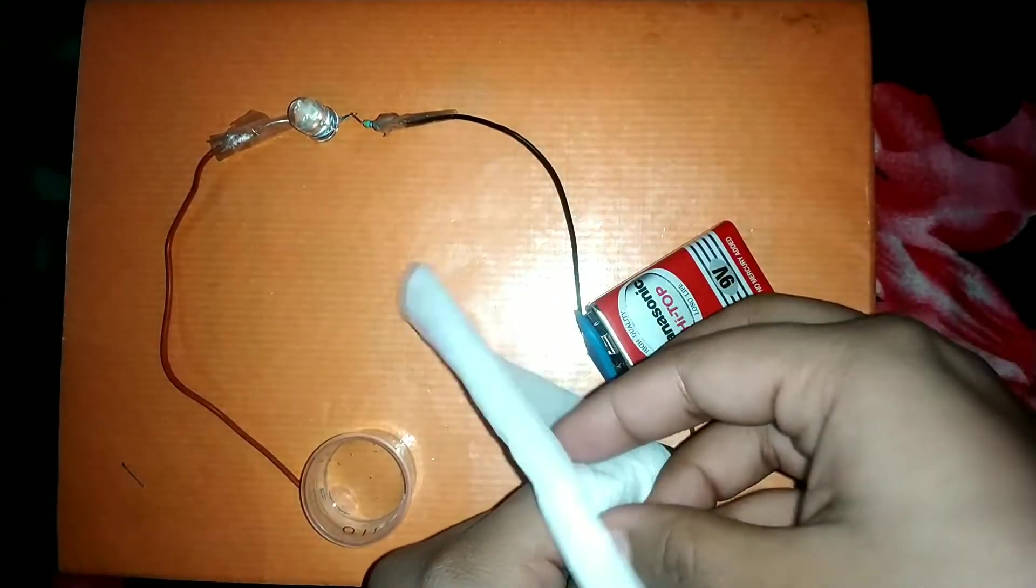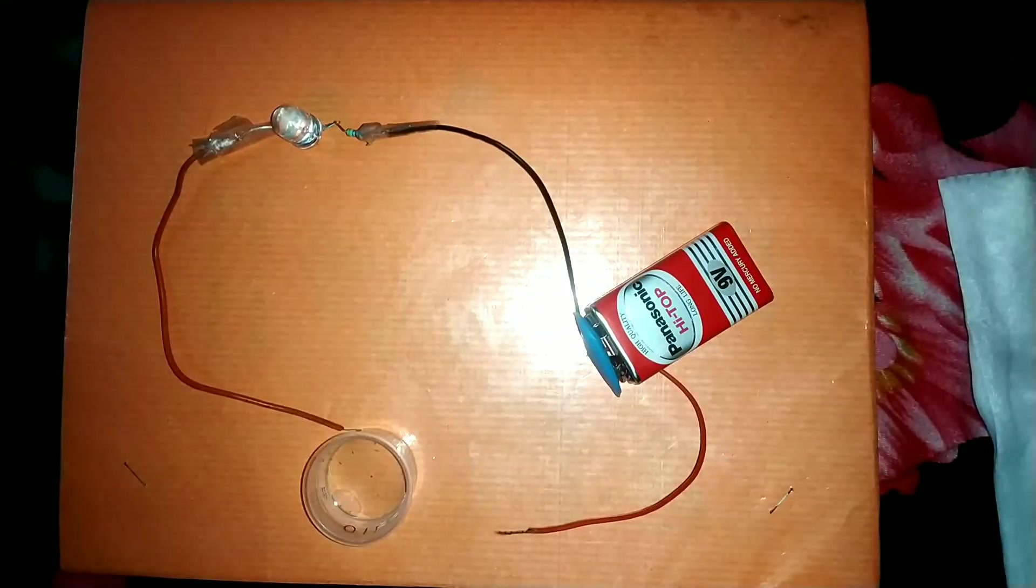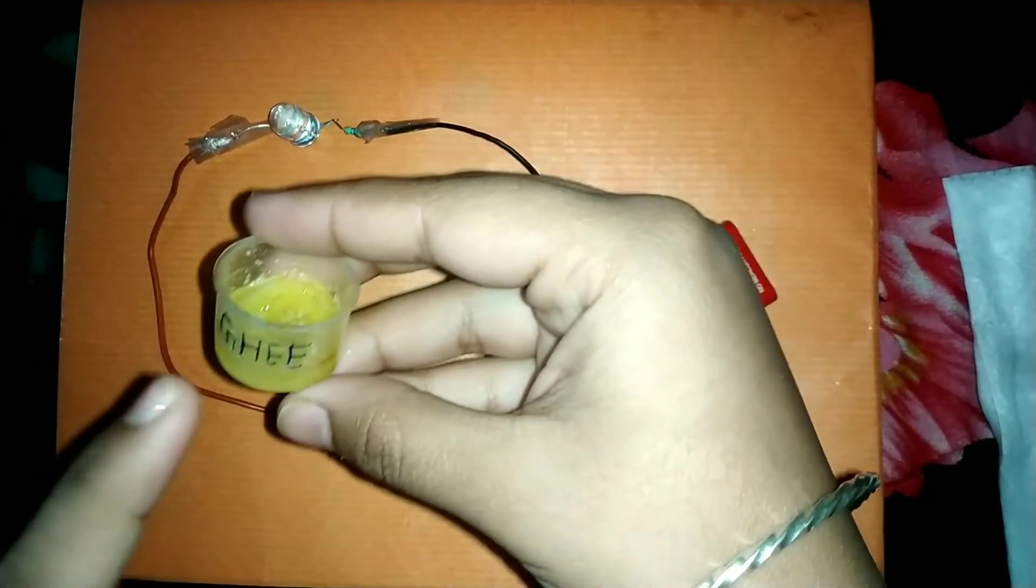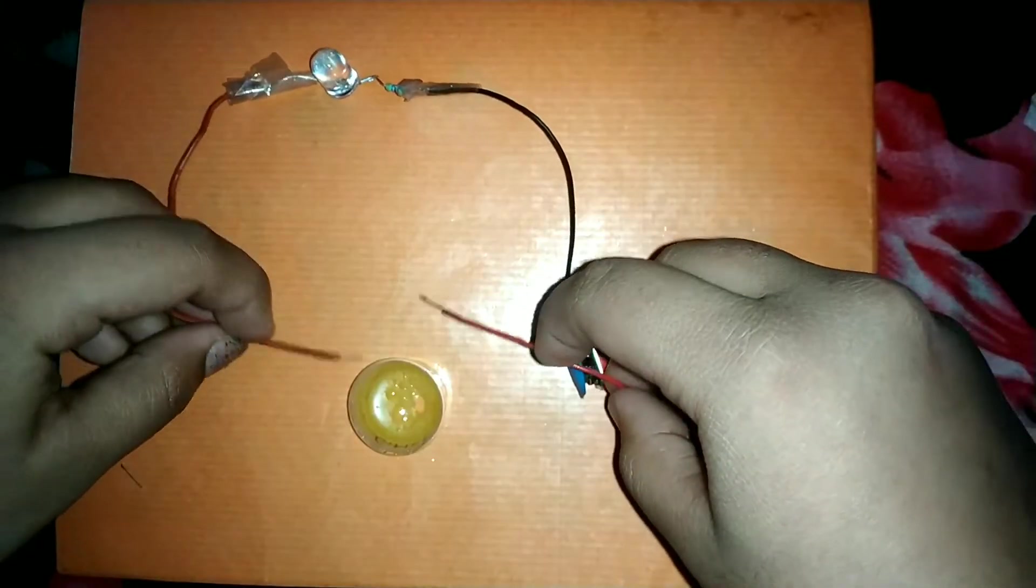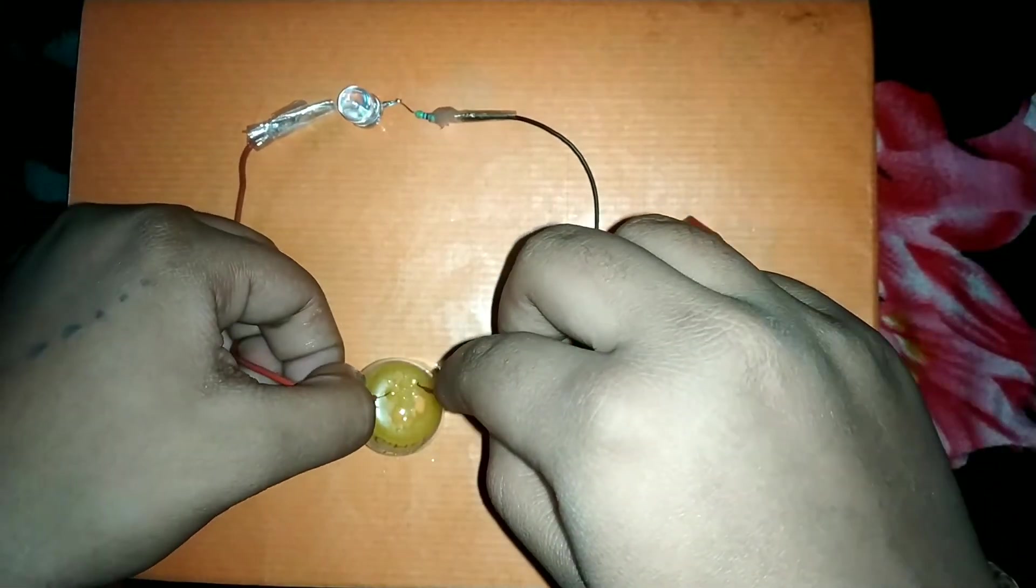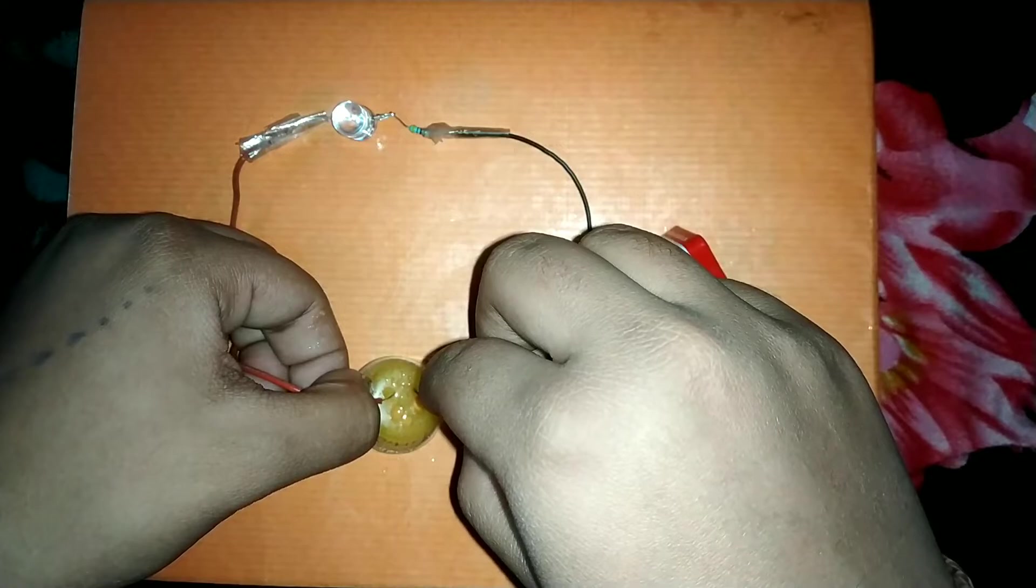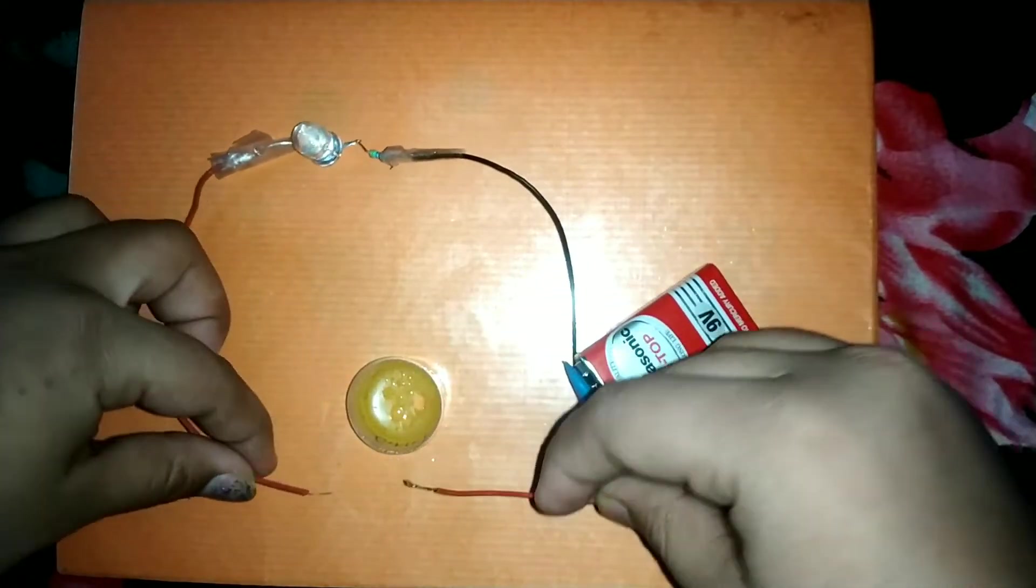Now again I will wipe the two ends. Now we will see what happens with the ghee. Now I will dip it in the ghee and you can see the bulb does not glow when dipped in the ghee.